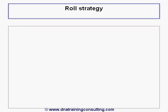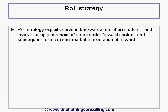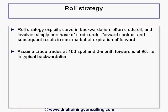We turn next to a description of the roll strategy mentioned at the closing of Chapter 1. The roll strategy seeks to exploit a curve in backwardation, quite often that of crude oil, and involves the purchase of crude under a forward contract and its subsequent resale in the spot market at the expiration of the forward contract. Assume for example that crude is trading at 100 in the spot market and that the 3-month forward lies at 95, evidencing a typical backwardation.